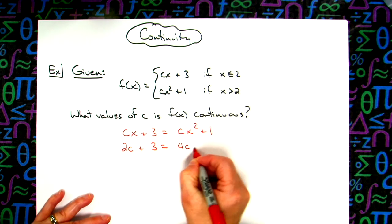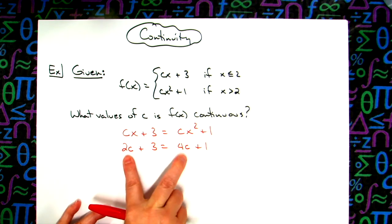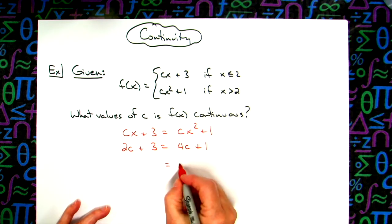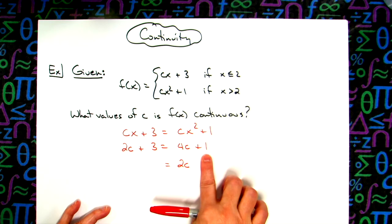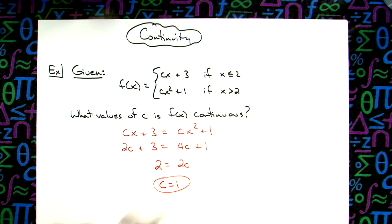Now I've got a nice little equation that I can solve for c. If I subtract c from both sides I'm going to have 2c over here. If I subtract 1 from both sides I'll have a 2, that makes my value of c equal to 1.